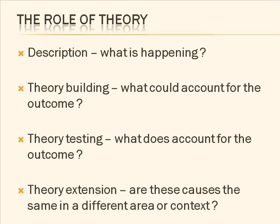It could be just description, though description is not usually the most likely to get published. It could be theory building — what could account for some outcomes. Though a lot of theory is in testing what accounts for a particular outcome. And even extending a theory: are the causes, for one thing, the same in a different area or a different context? But these are some of the ways in which we make research come about in terms of theory.